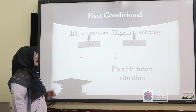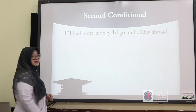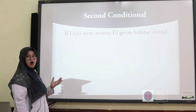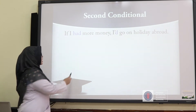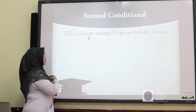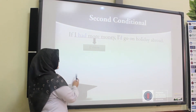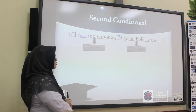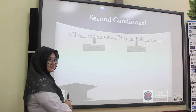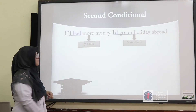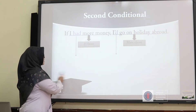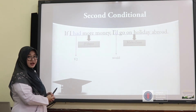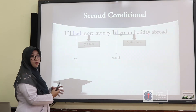Now let's look at the second conditional: 'If I had more money, I would go on holiday abroad.' It is also the same in structure — it consists of two clauses: the if-clause and the main clause. But do you notice something different from the first conditional? Yes, it's the verbs. In this sentence we use 'had' and 'would,' which is past simple and the second form of the modal 'will.'